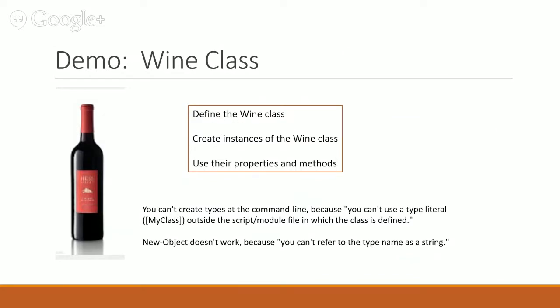I'm going to do a demo of the wine class — I'll show you the class definition, create an instance, and show you how to use its properties and methods. I'll be working in ISE because you can't create types at the command line. You can't use a type literal outside the script, module, or file in which the class is defined.